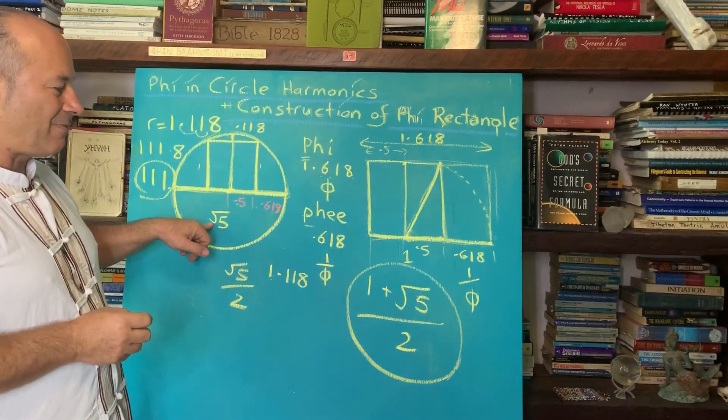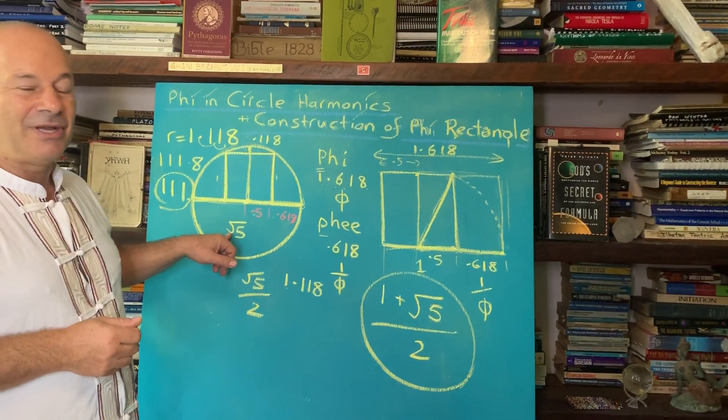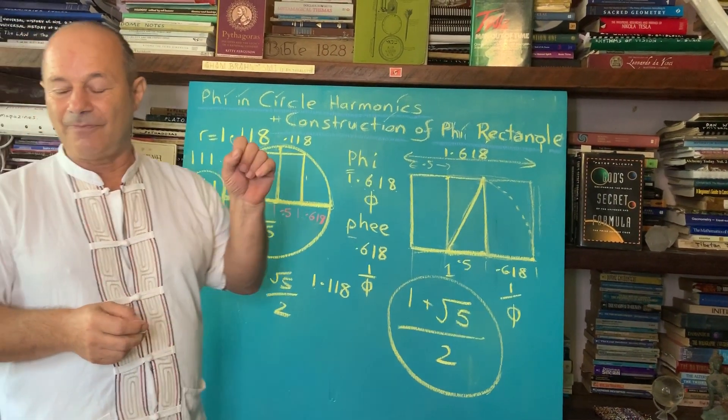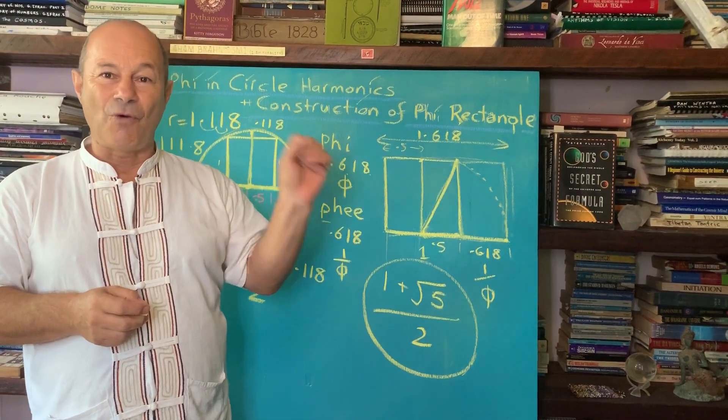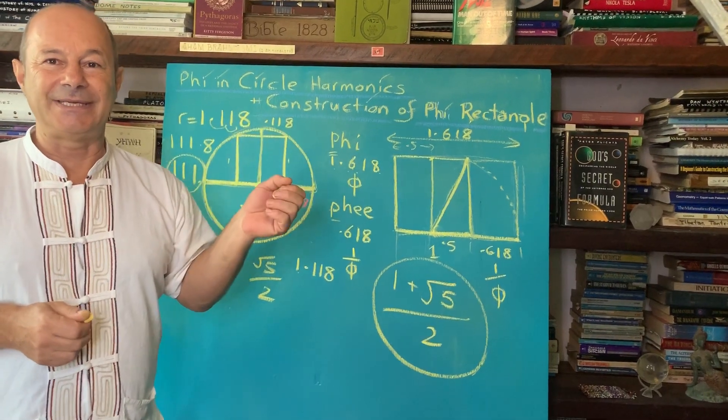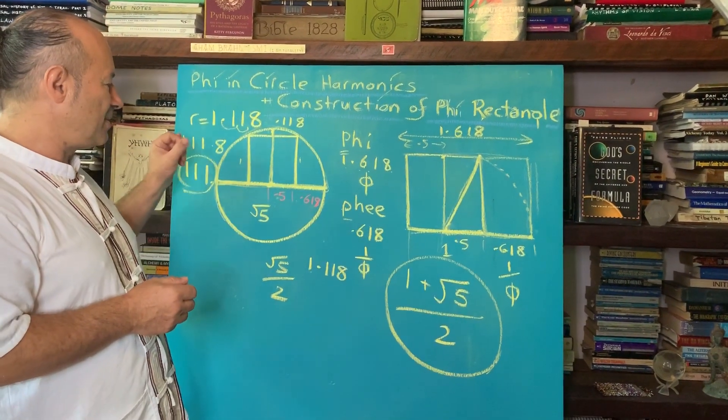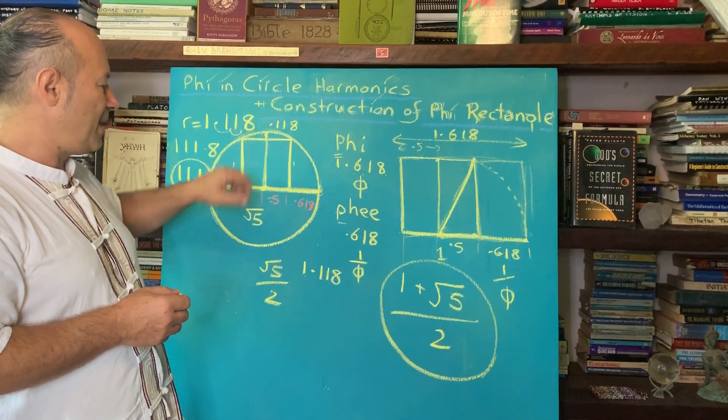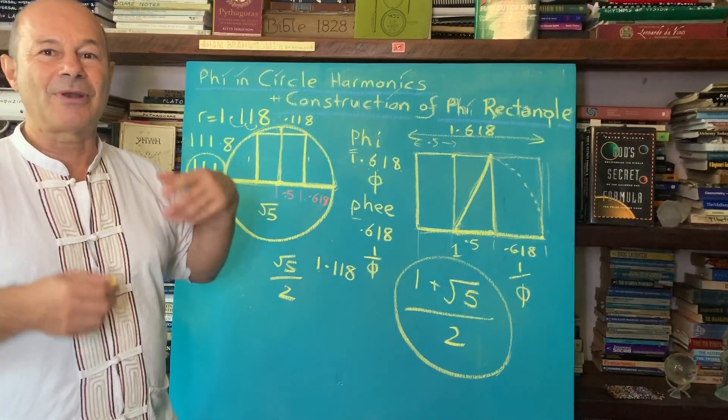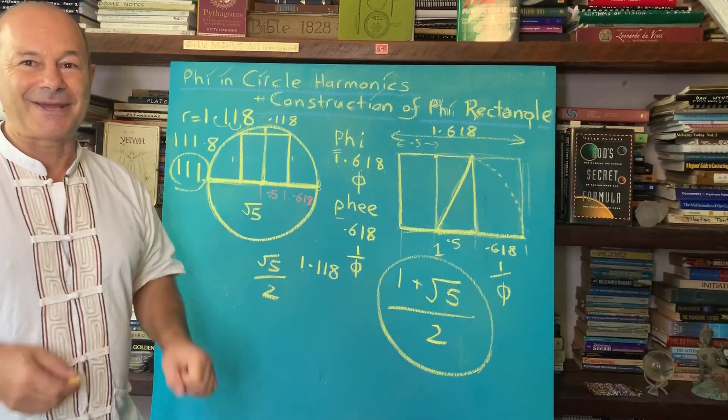The key factor is root 5. We need to understand what root 5 is. In one of the next videos, we're going to show how we transform from the 2 by 2 square, how the 4 becomes the 5. We'll show how Osiris was sitting on a double square, which represented the transformation from the square to root 5. This is all encoded and embedded in our history.